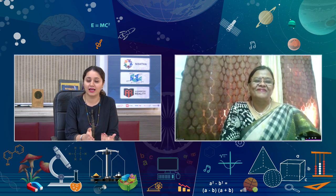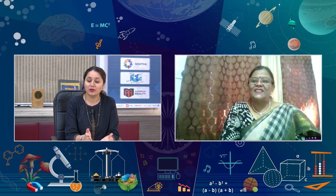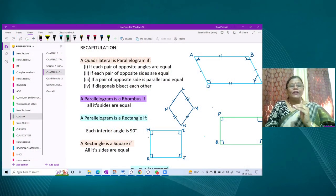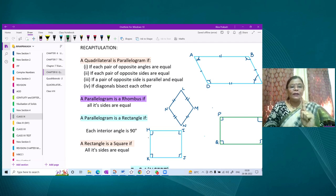Today we are going to discuss part four of quadrilaterals, and I'll request you to include a recap of the previous sessions. Sure. The chapter's name is Quadrilaterals — any four-sided closed figure. In this chapter we discussed a particular type of quadrilateral, starting with a parallelogram. A parallelogram is a quadrilateral where each pair of opposite angles are equal, opposite sides are equal, one pair of opposite sides is parallel and equal, and the diagonals bisect each other.